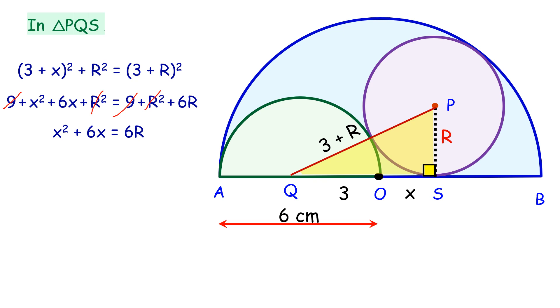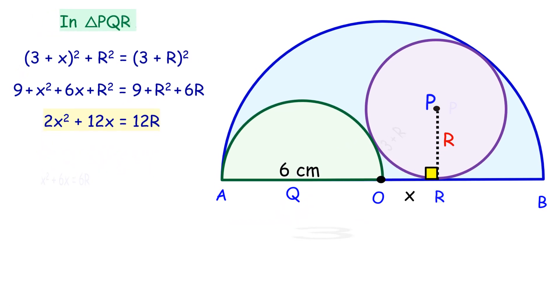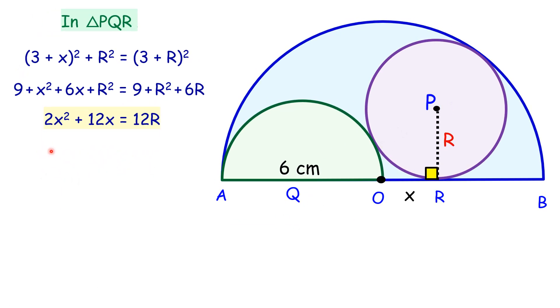Let's multiply by 2 on both sides. We will see why we had multiplied with 2. We will get 2X² + 12X = 12R. We have got one equation in two variables, so we need to form one more triangle to form one more equation and get the value of X and R.